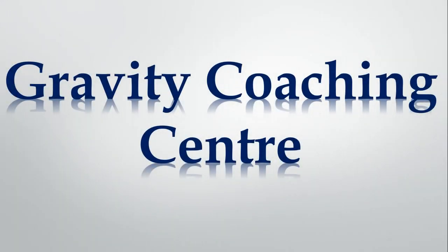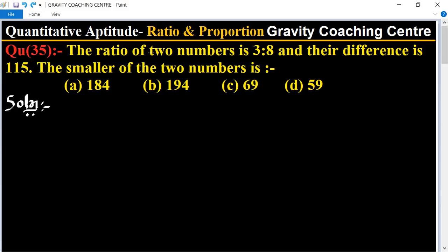Welcome to our channel Gravity Coaching Center, quantitative aptitude chapter ratio and proportions. Question number 35: The ratio of two numbers is 3 to 8 and their difference is 115. The smaller of the two numbers is what?